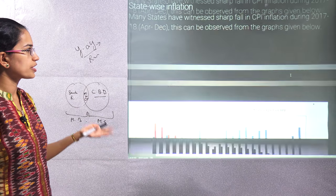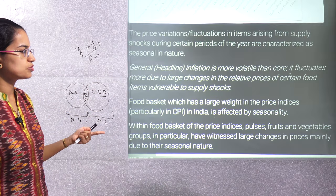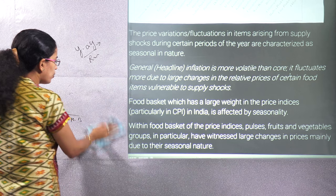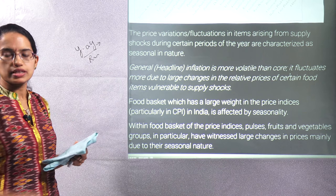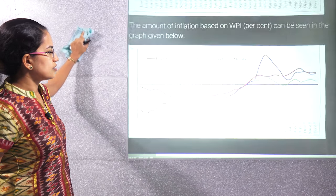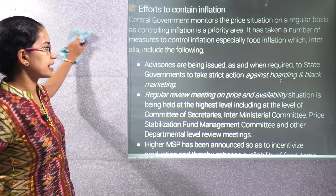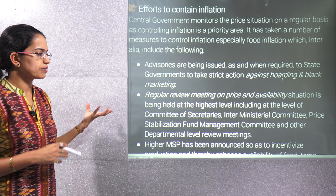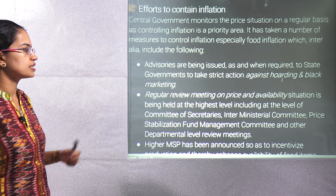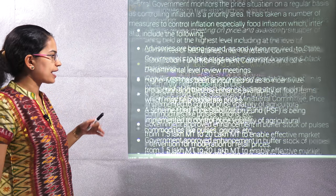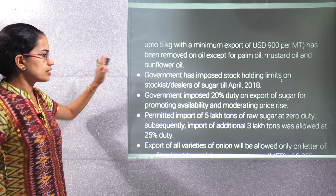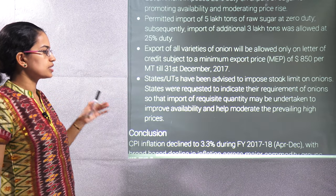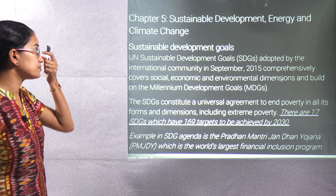Charts showing state-wise and sector-wise distribution in inflation are really important. General inflation is more volatile than core inflation due to more changes in relative prices over the year. Efforts to contain inflation include a price stabilization fund, actions against hoarding and black marketing, government promotion of minimum exports, imposed stock-holding limits for dealers of sugar and other commodities, and implementation of related schemes.